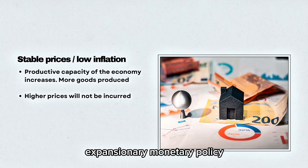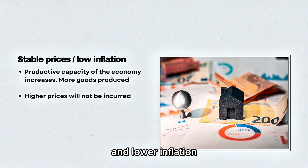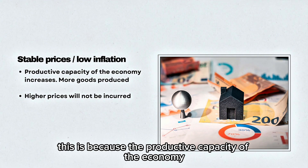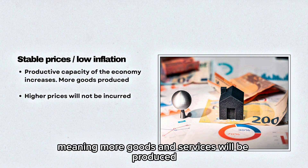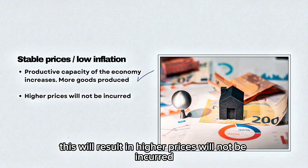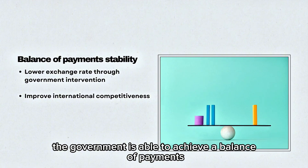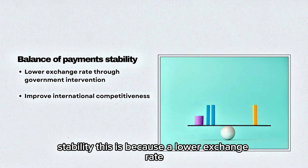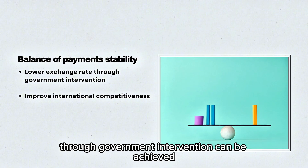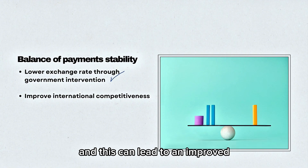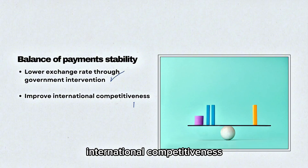Expansionary monetary policy also aims for more stable prices and lower inflation. This is because the productive capacity of the economy has increased, meaning more goods and services will be produced, so higher prices will not be incurred. Lastly, the government is able to achieve balance of payment stability, as a lower exchange rate through government intervention can lead to improved international competitiveness.